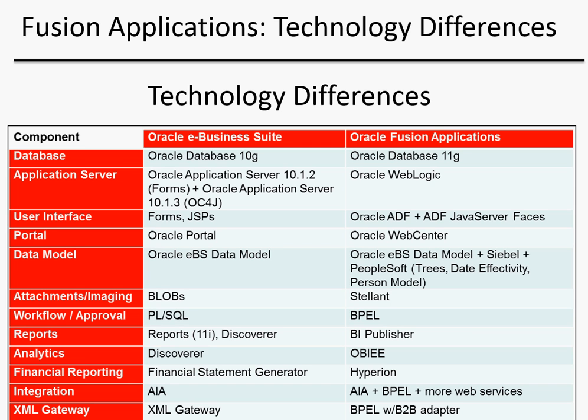The data model moves from the Oracle E-Business Suite data model to one that incorporates technologies from the companies Oracle has purchased over the last couple of years — things like Siebel data model pieces and PeopleSoft data model pieces, which you'll see as part of Oracle Fusion Applications. To handle attachments and imaging, Oracle moves from BLOBs — binary large objects — to a new technology called Stellant.